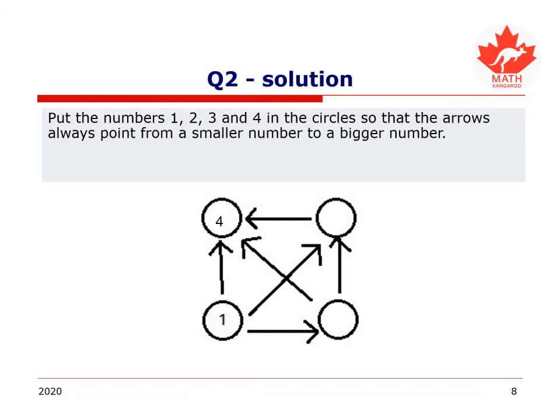Now I have two numbers left to distribute. I have a circle that two arrows are pointing towards and one away, and I have a circle that two arrows are pointing away from and one towards. So I have a very important vertical arrow between those two numbers, 2 and 3, so I know where to put the 2 at the bottom because it's smaller, pointing to the larger number, the 3. Hopefully you had this solution worked out.